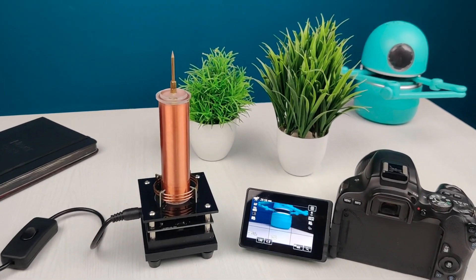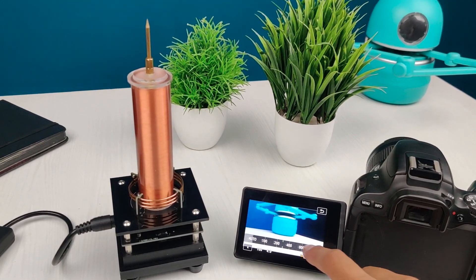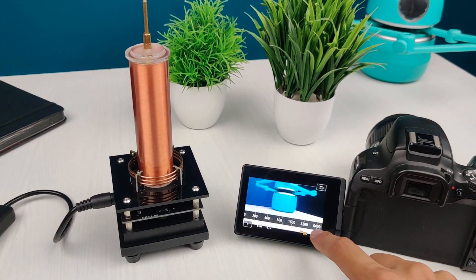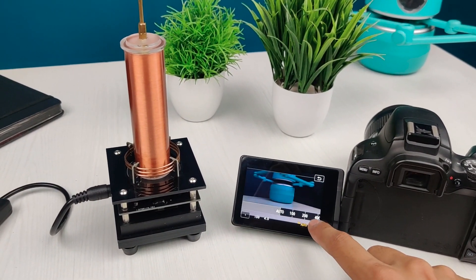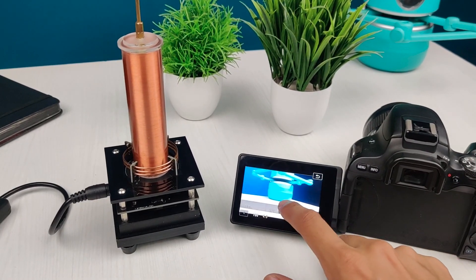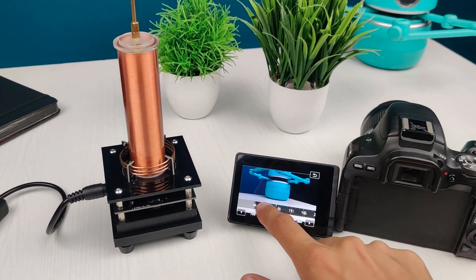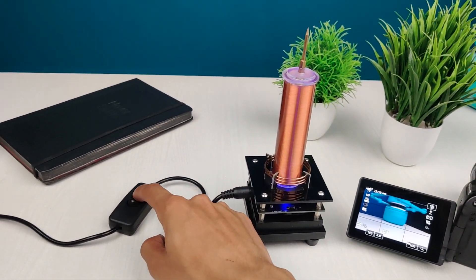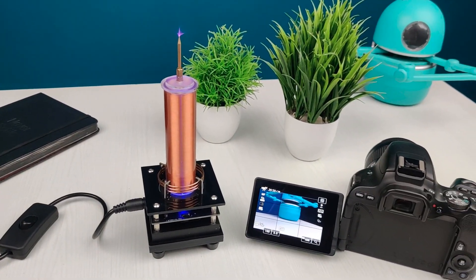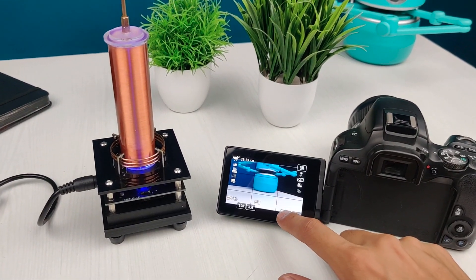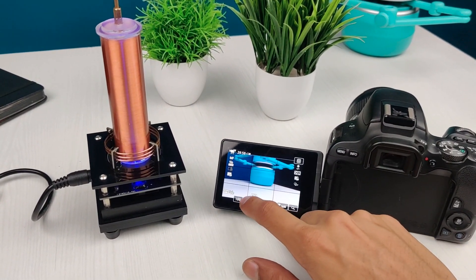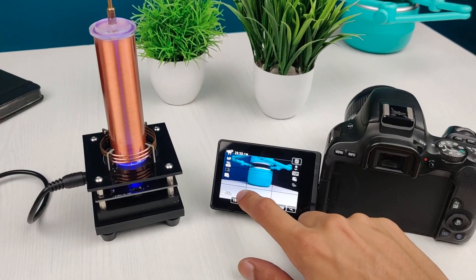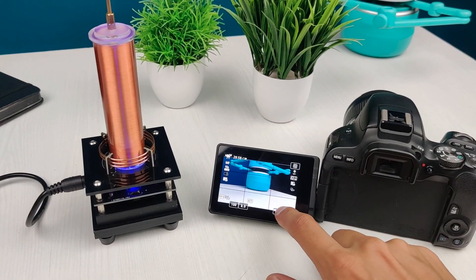This is also affecting my camera's touchscreen. As you can see, I am currently able to change the settings from my touchscreen, but as soon as I turn on the Tesla coil, the touchscreen stops working as if my finger isn't touching the touchscreen. That's a strange behavior, but don't worry, the touchscreen operates normally when the Tesla coil is turned off.